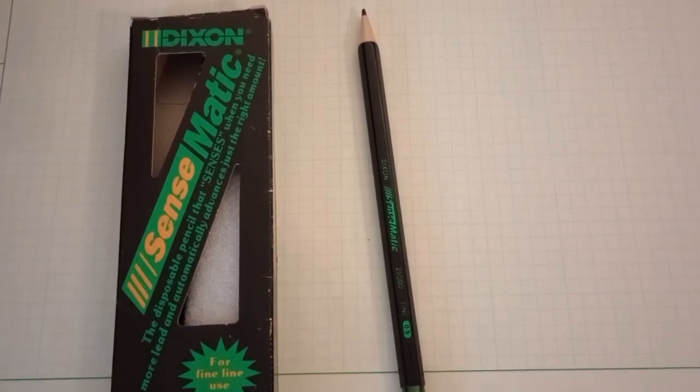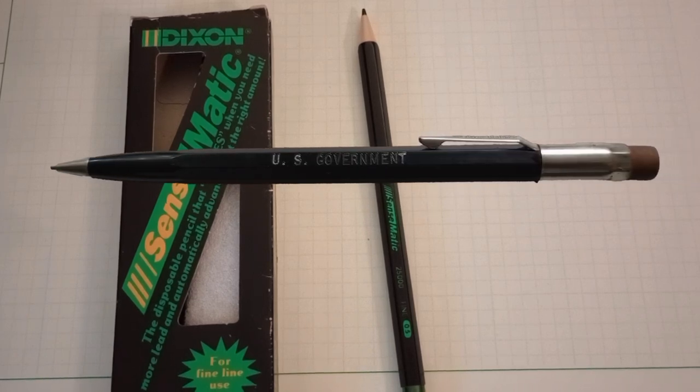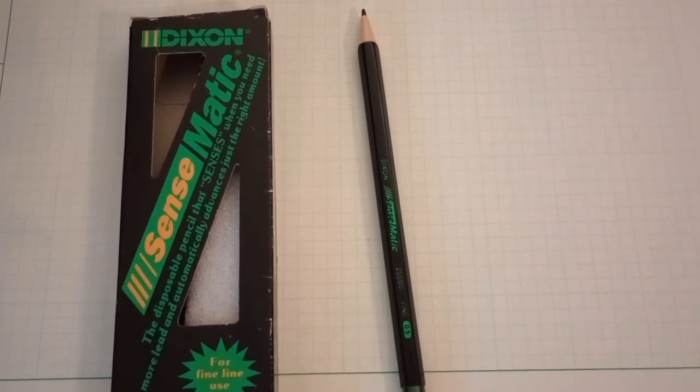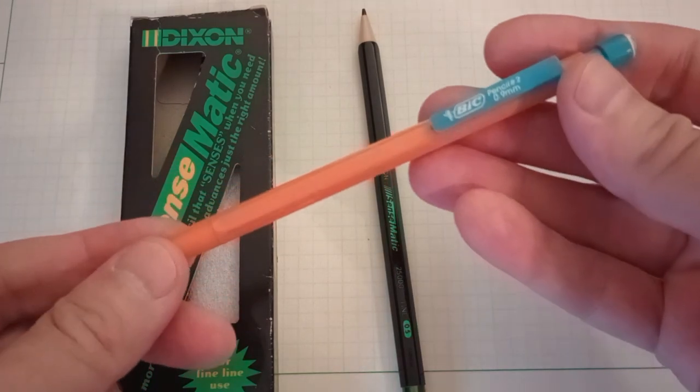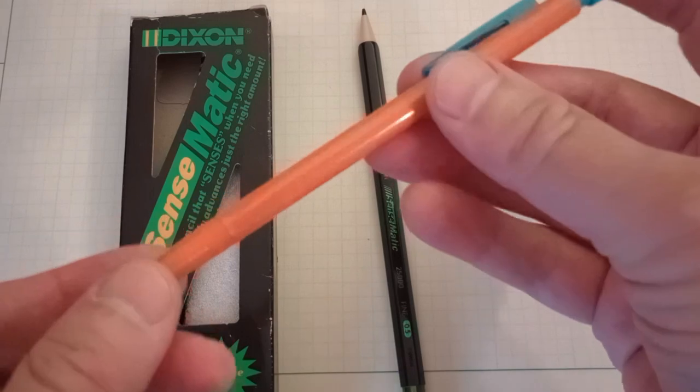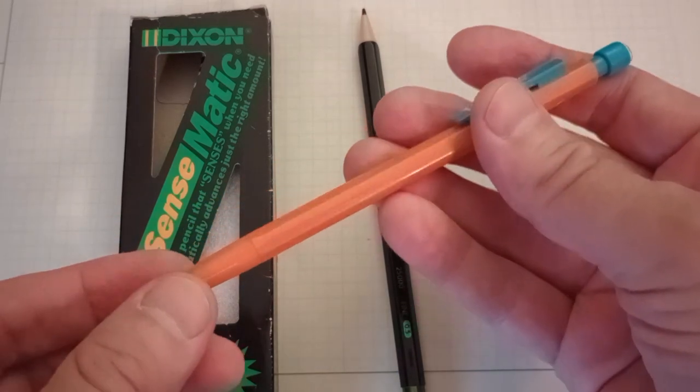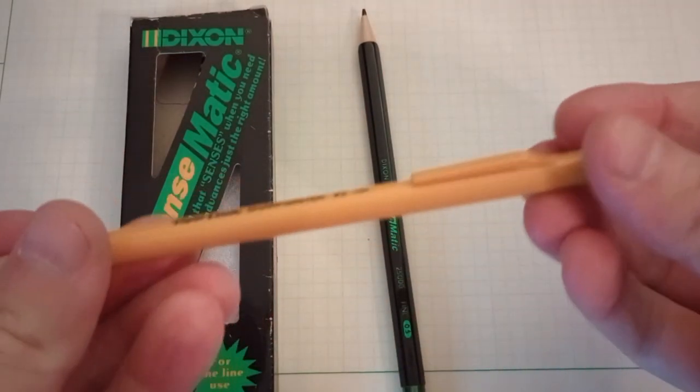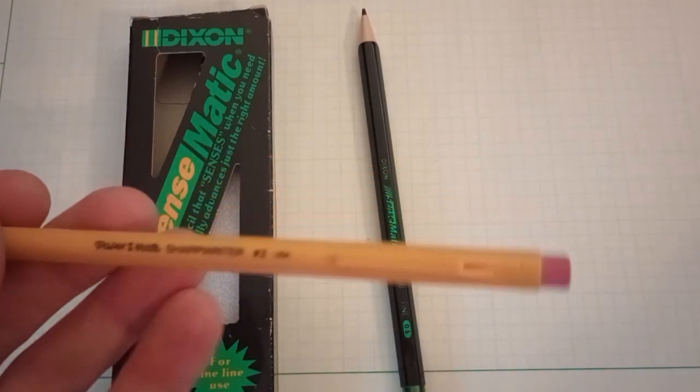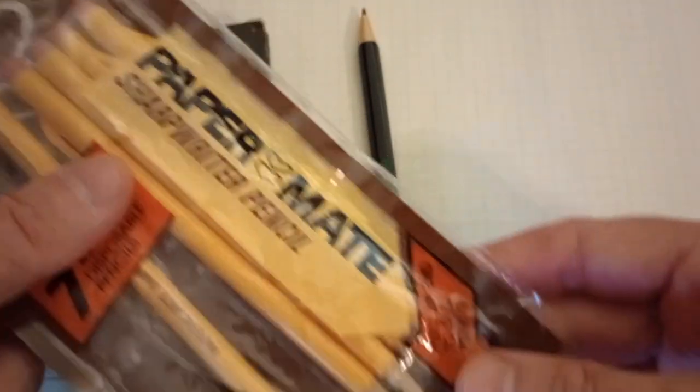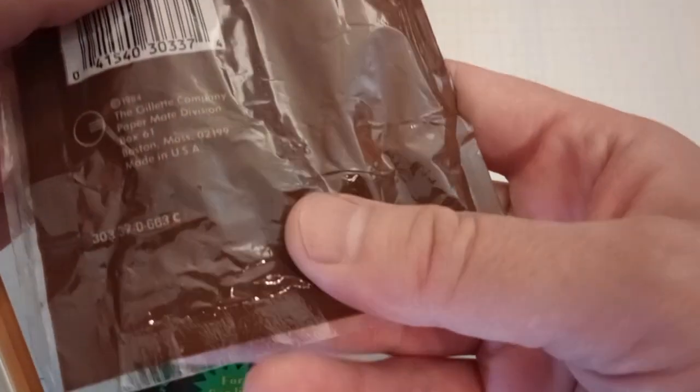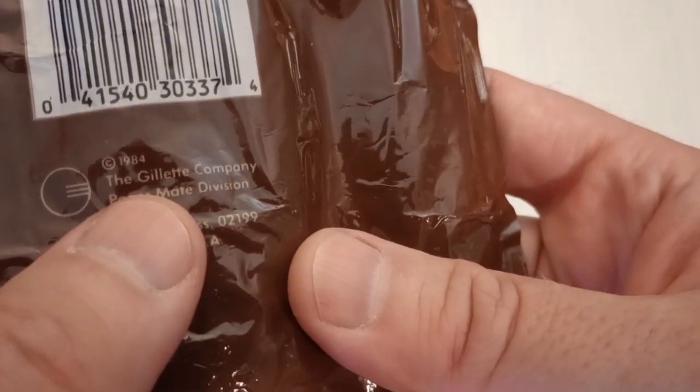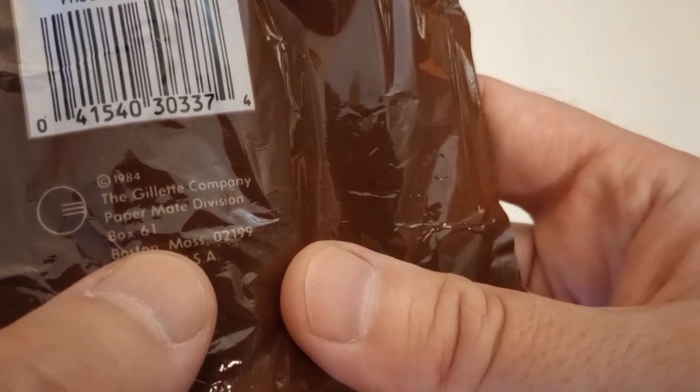And I was using a Scripto classic mechanical pencil, but there were other offerings that were popular. The forerunner to the standard now familiar Bic mechanical pencil, and an ancestor of these was in the eighties available, as was the earliest version of the Papermate Sharp Writer. And I have a package from the eighties here, 1984 Gillette company, Papermate division.